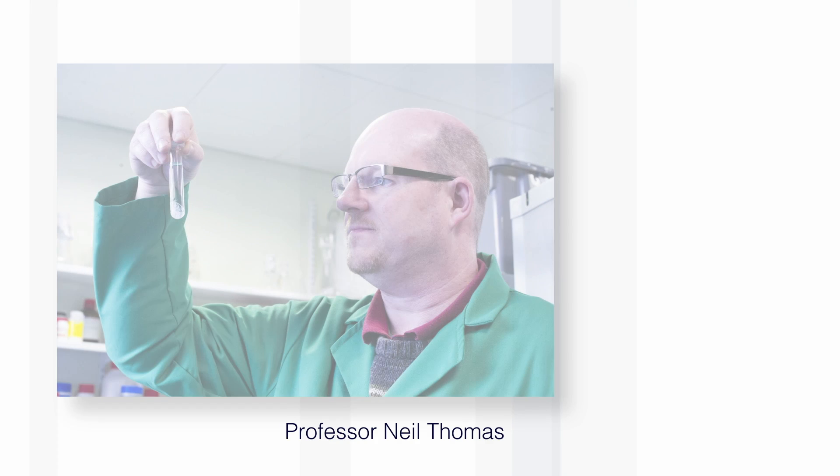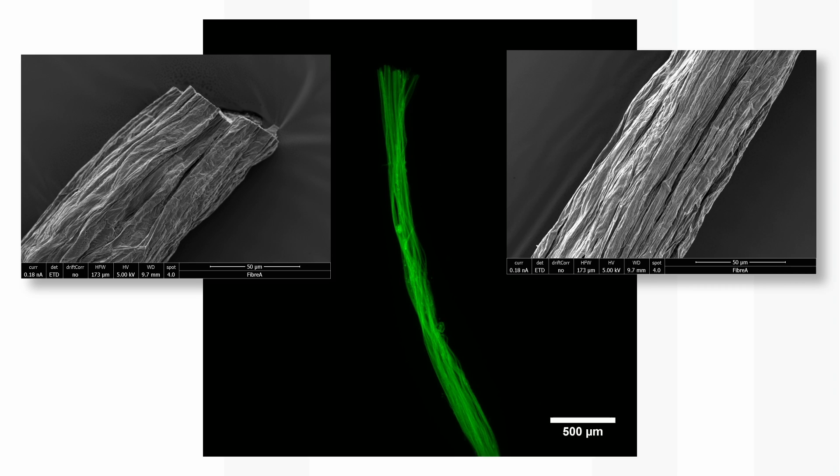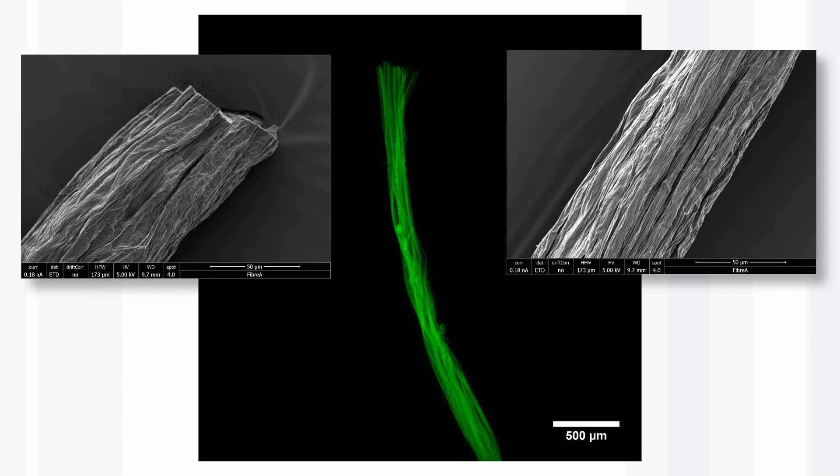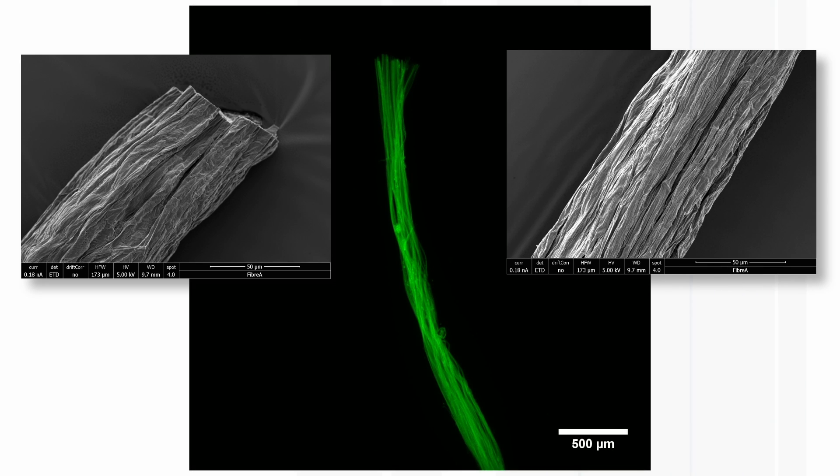Chris's supervisor, Neil Thomas, uses click chemistry to activate spider silk. You know, the fibers that are made by spiders. What Neil does is to activate the surface of the spider's silk to put on either fluorescent probes or to put on drug molecules so that it can be used for wound treatment. And he's produced some really nice examples of fluorescent spider silk. And he sent me some nice pictures.